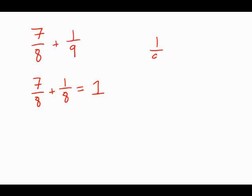One-ninth is slightly smaller than one-eighth. If you make the bottom of a fraction bigger, you make the fraction smaller. So that means seven-eighths plus one-ninth is going to be something slightly smaller than one.